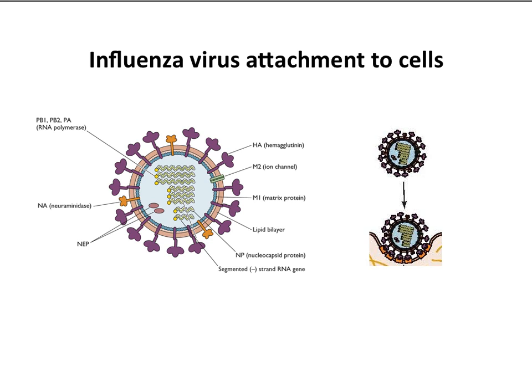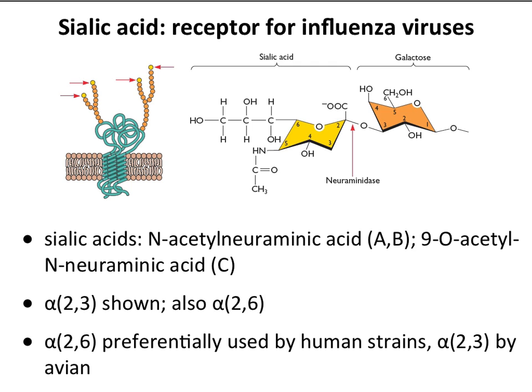Now, how about an enveloped virus? Influenza virus is a great model. Remember, influenza is an enveloped virus with a couple of different kinds of proteins in the envelope. The two major ones are the hemagglutinin, the HA, and the neuraminidase. The HA is the purple one here, present in the greatest numbers. It's the molecule that attaches to the cell receptor. For all influenza viruses, the cell receptor is a sugar — a molecule of sialic acid.